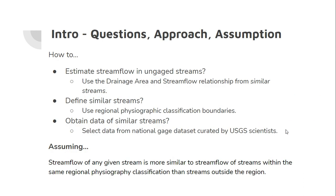The key questions I answer are how to estimate stream flow in ungauged streams. I argue that you can use drainage area and stream flow from similar streams to estimate the stream flow of a stream of interest — specifically those within the same physiographic classification boundary. That is how I define similar streams: those that fall within the same regional physiographic classification boundary. There are many of those types of classification boundaries, and I'll review the ones I use later.